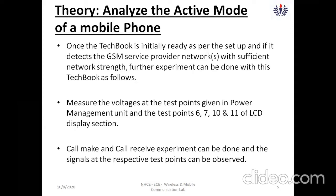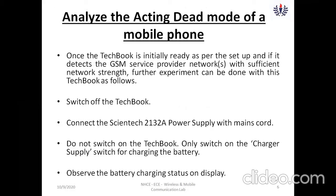We need to measure voltages with respect to these test point pins using a multimeter. Set the multimeter in the appropriate mode, with one probe at test point 0.6 and the other probe at the ground potential. Calls can be made and received, and signals at the respective test points can be observed. Voltages for different modes can then be analyzed.